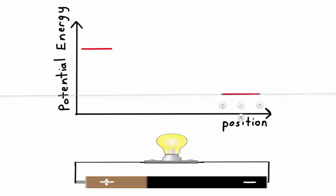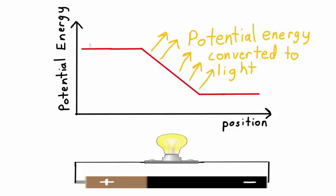Here we have our positive terminal of the battery where all the charges have high potential energy, and here we have our negative terminal of the battery where the charges have low potential energy. The question is what happens to all this energy when the charges move through the circuit. In the case of the circuit shown, the charges' energy is converted as they move through the light bulb. As they move through the wire they have very high potential energy, then they lose this potential energy going across the light bulb, and then they have low potential energy coming down the other side.